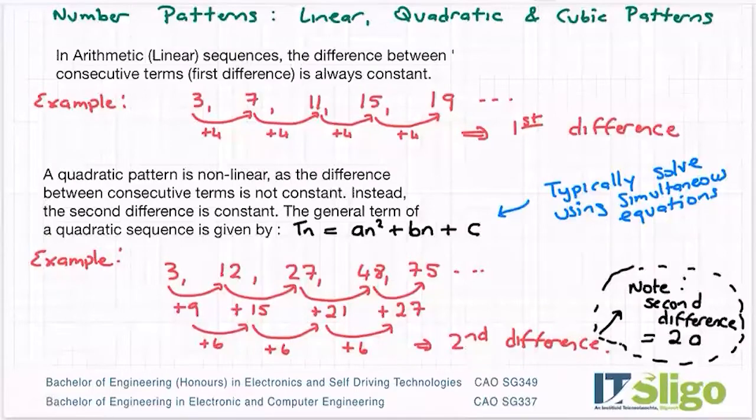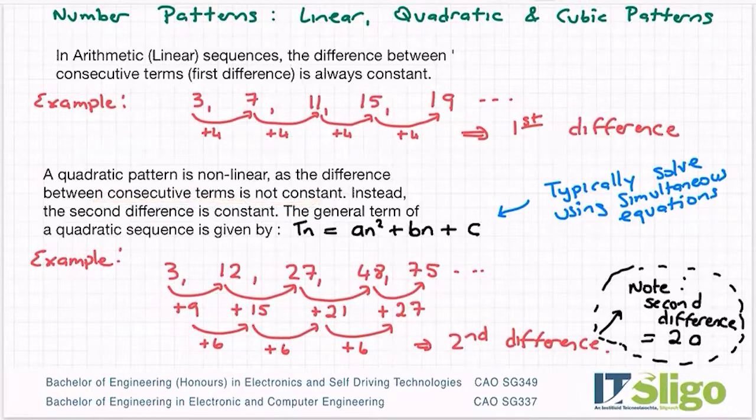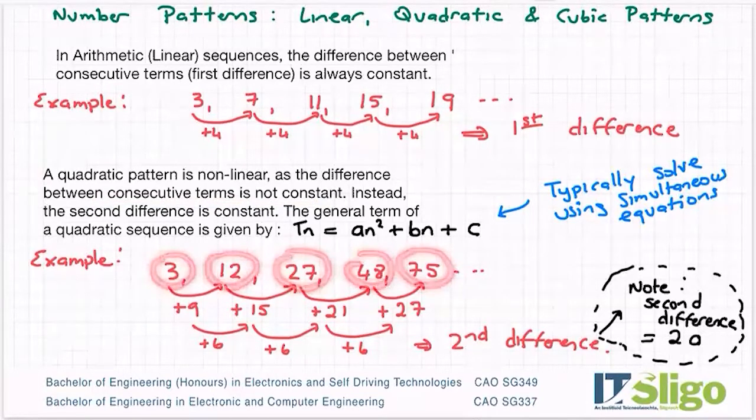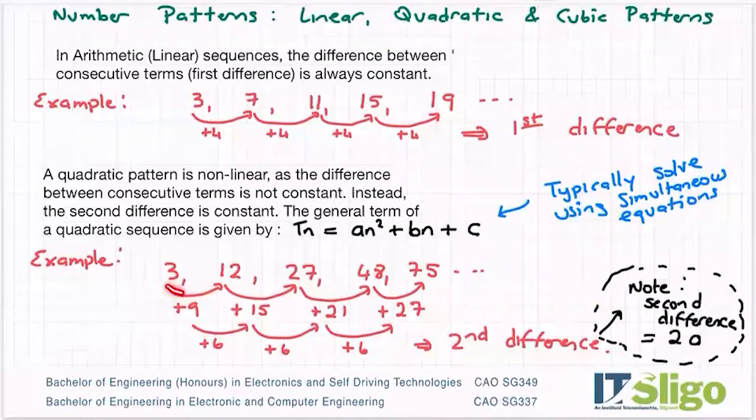There's a couple more as part of your course: the quadratic pattern or sequence and the cubic sequence. A quadratic pattern is non-linear because the difference between consecutive terms is not constant. I have an example here of a quadratic sequence: 3, 12, 27, 48, 75, and I've got the first difference between each of the terms—9, 15, 21, and 27. You can see that first difference—it's not the same, so it's a non-linear sequence.